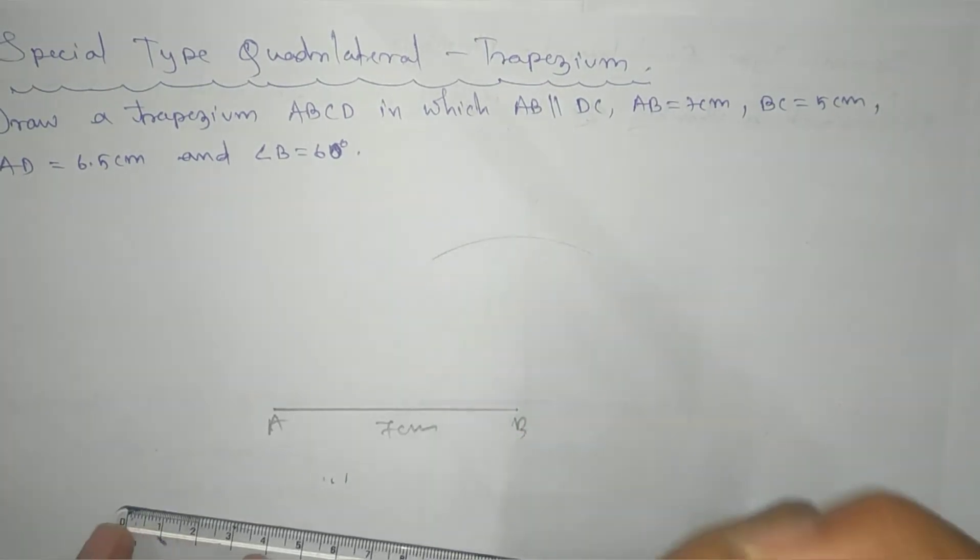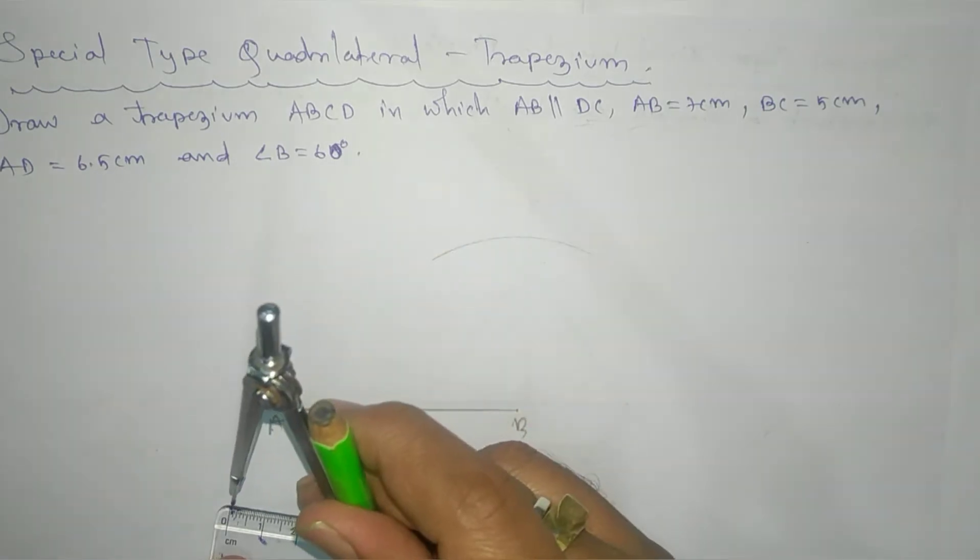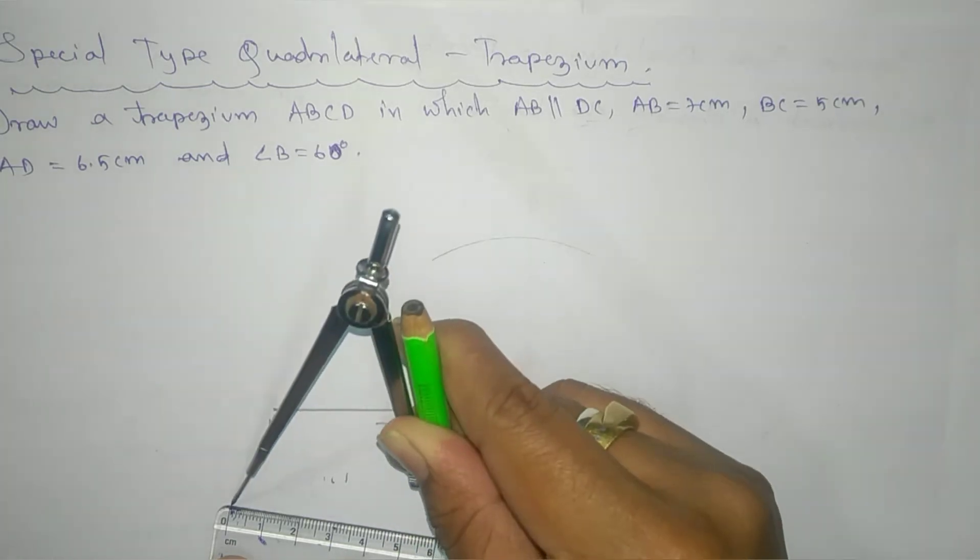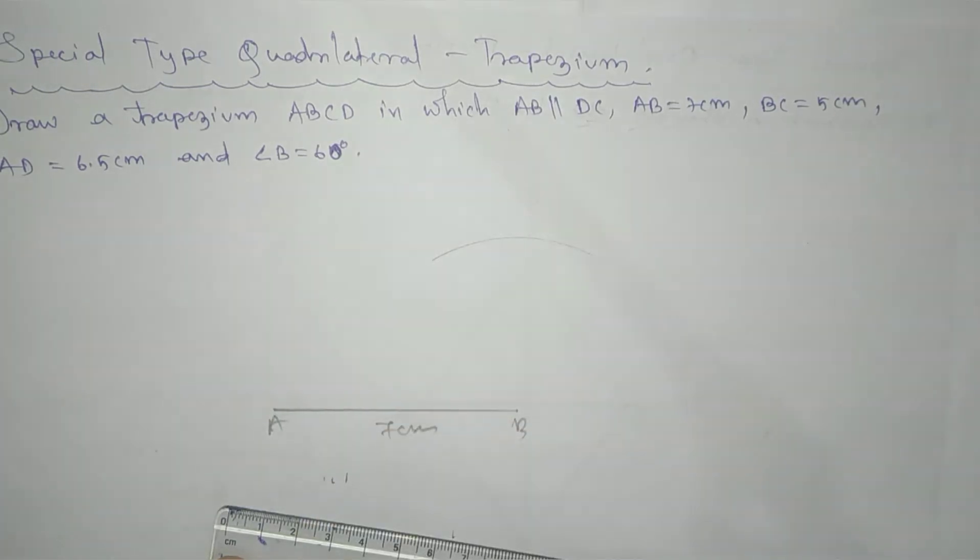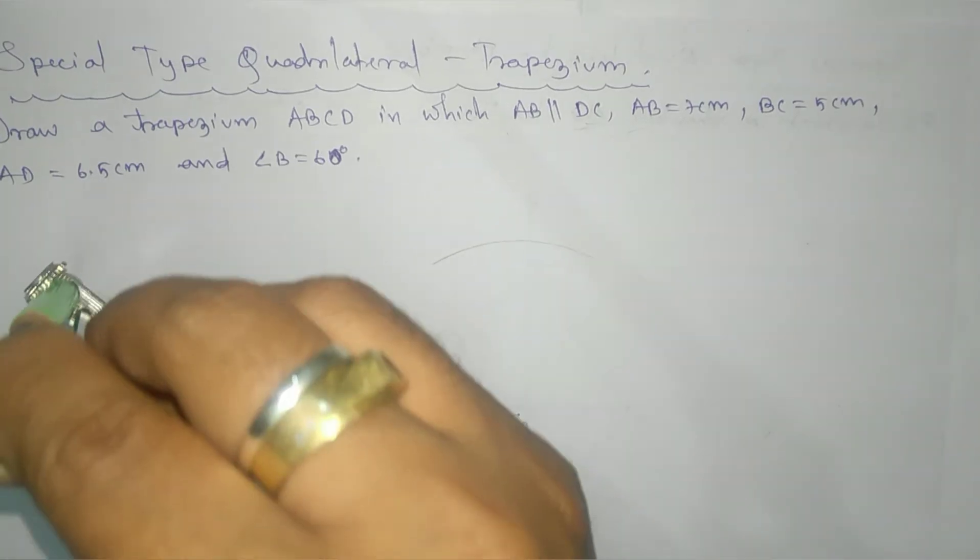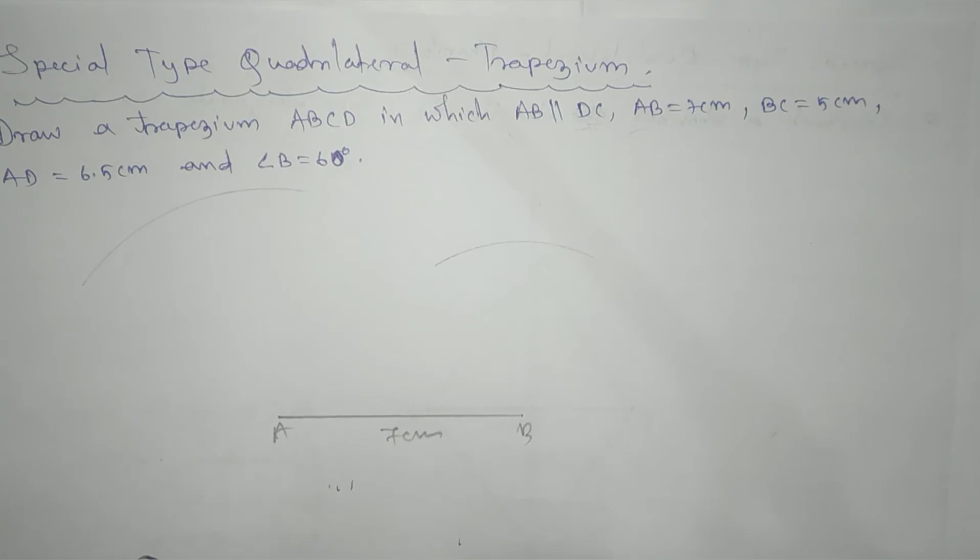And then for your AD, so AD has been given, that is 6.5. So we go for the 6.5, here we have 6.5. Now we'll take it will be somewhere here. We don't know where it will be, so let's take the arc for 6.5 cm.